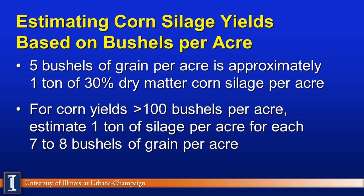Certainly, estimating corn silage yields based on bushels is one approach. From this bulletin information, 5 bushels of grain per acre equates to about 1 ton of 30% dry matter corn silage. Unfortunately, we're going to have some of that acreage here in the Midwest. For corn yields greater than 100 bushels, you can estimate about 1 ton of corn silage for every 7 or 8 bushels. So if we know the amount of grain we have, we can back into some of these calculations.